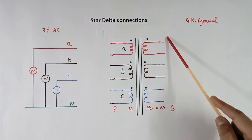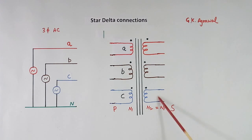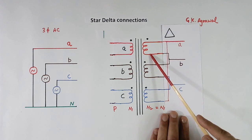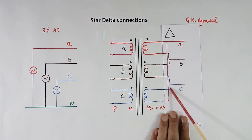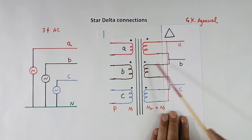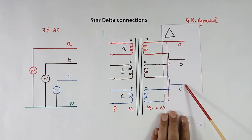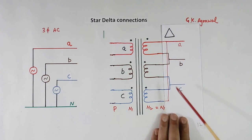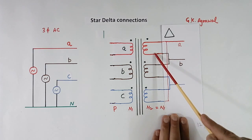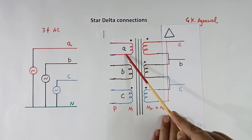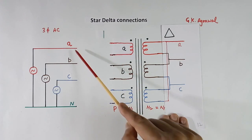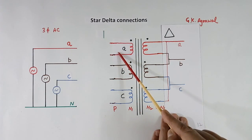Now we will see how to make delta connection of the transformer secondary. In this delta connection, the windings are looped: this wire is connected here, this wire here, and this wire here. The marking terminals are A, B, C — so we get outputs A, B, C with no neutral. If turns are equal and the primary is connected in star, this secondary delta voltage will equal the phase voltage. If the primary is connected line to line, then it will be root 3 times.